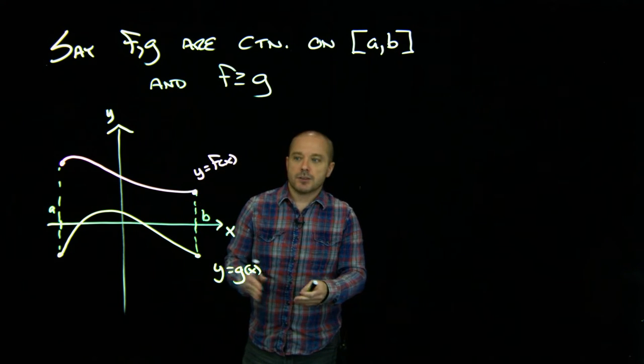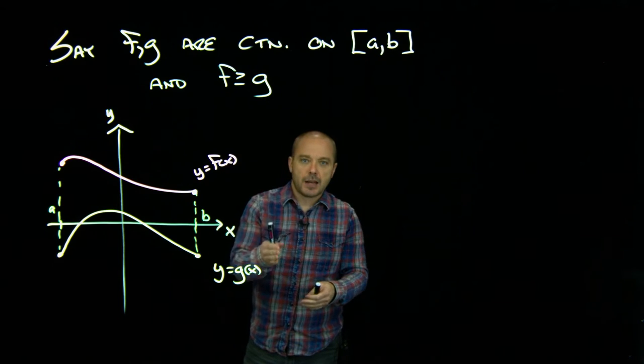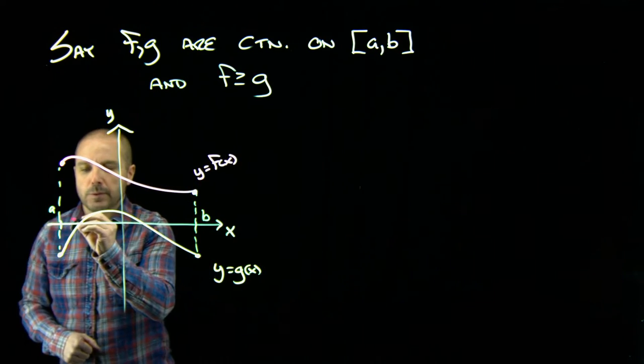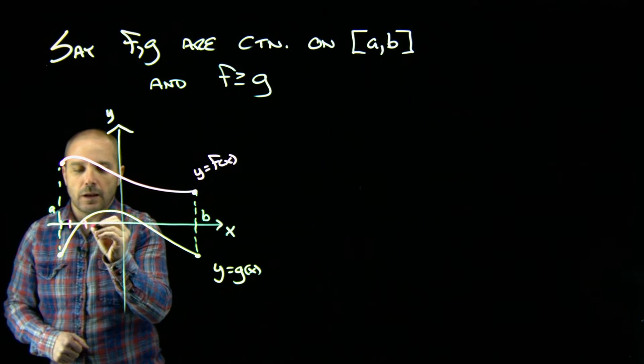Now remember for area the first thing we did was partition that interval. So I'll put some marks here on the axis to represent our partition.